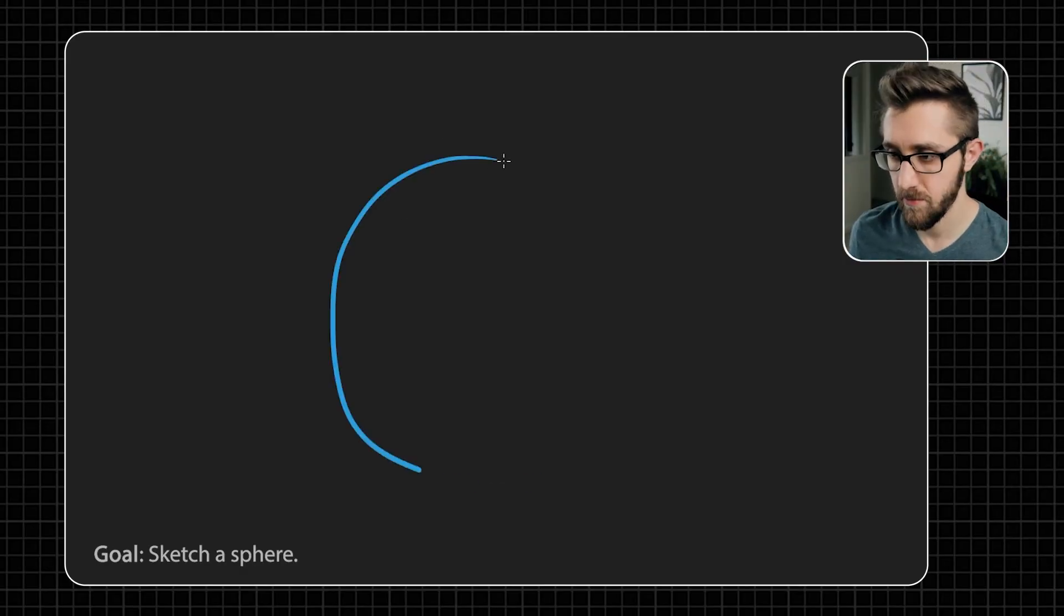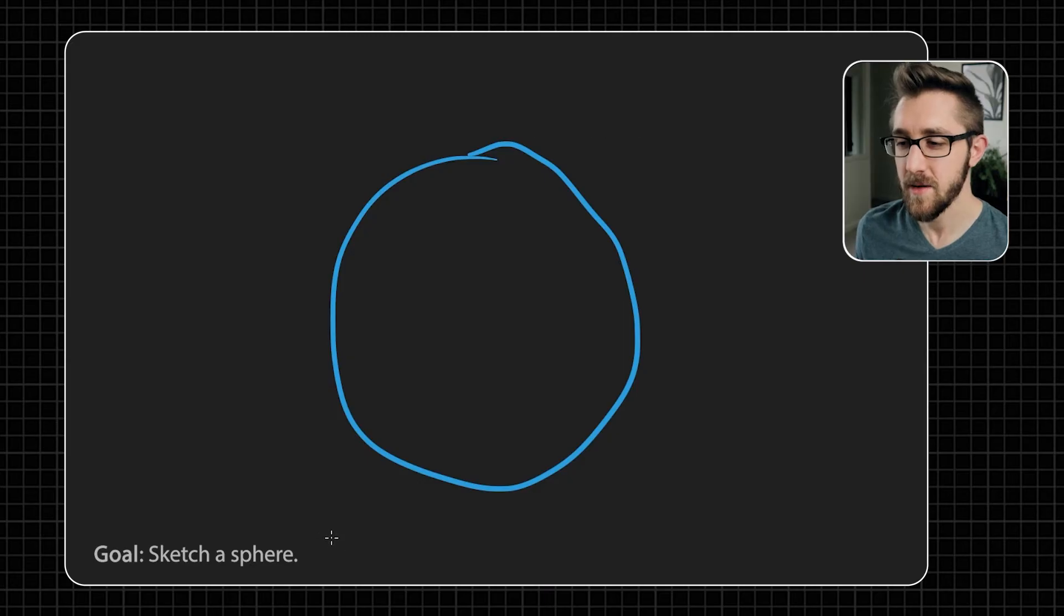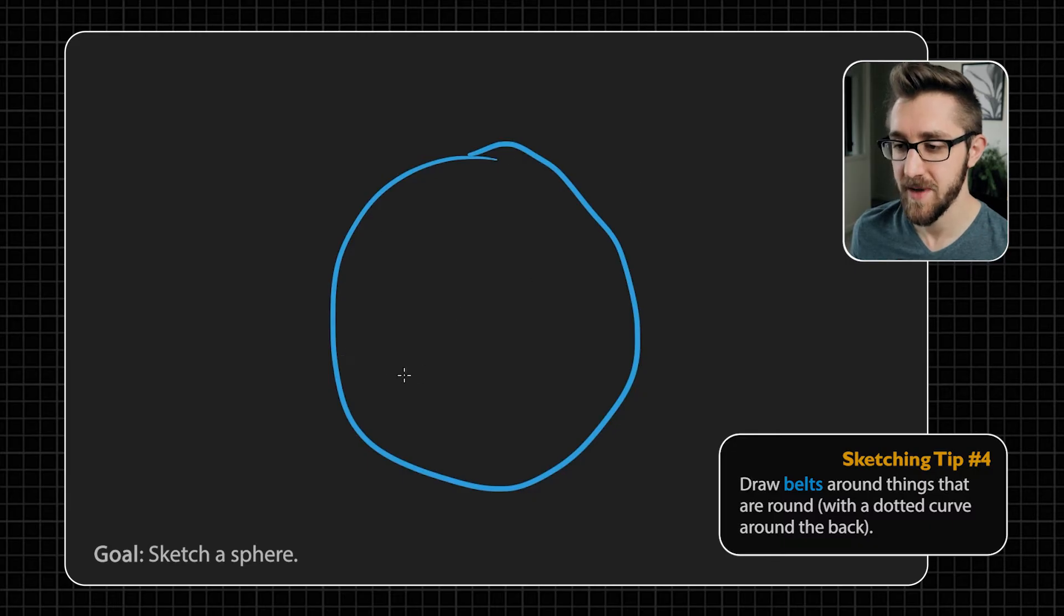Tip number four and sort of tip number five are about drawing things that are round. So let's say that we want to draw a sphere, something like the peel of a grapefruit or the outside of a basketball, something like that. If we were to just draw a circle, then it's sort of hard to say what is this meant to represent? Is it a flat disk that we're looking at head on? Or is it actually a circle? Is it just like a loop of string? Or is it a sphere? And this blue curve is the outline of it. If we wanted to designate it as a sphere, we're going to give it what I call a belt.